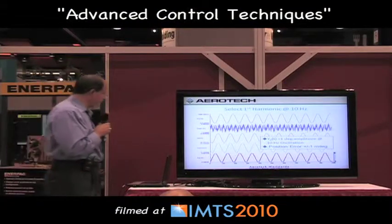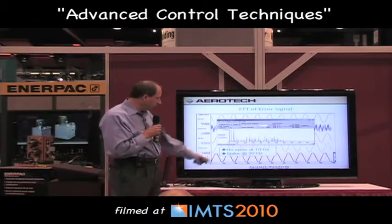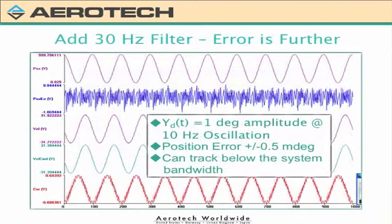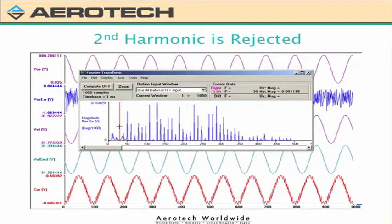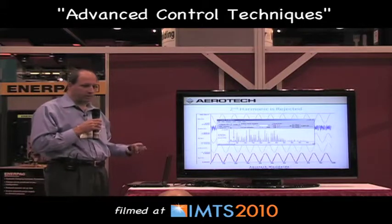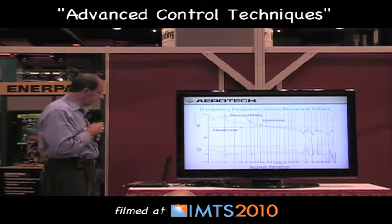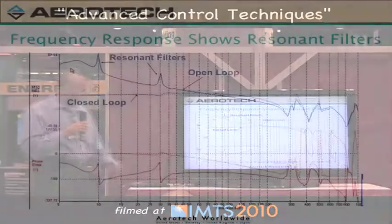There are harmonics visible in that signal. Doing an FFT, you can see there's no spike at 10 Hz — the first harmonic we removed — but there is a third harmonic at 30 Hz. I then apply a 30 Hz filter and the error comes down to about half a milli-degree. The FFT confirms the 30 Hz harmonic is gone and the 10 Hz is still gone, with everything else in the noise. Overall you see roughly a 40 times reduction in error due to this oscillatory motion on the A axis.